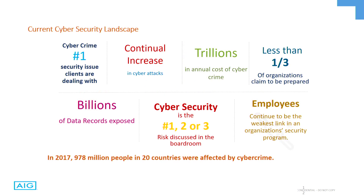So where does all that leave us? These are the current numbers we see at AIG as of the middle of this year. Cybercrime is continuing to grow — it's the number one issue. The FBI has estimated over five billion in the last four years have been lost due to cybercrime — and that's just extortion attempts, not including ransomware or other things. We are now reaching the threshold of trillions in cost annually in cybersecurity. We are seeing a continual rise in the number of incidents per year. Billions of data records are lost every year. Last year, even taking away Equifax, it's still billions.